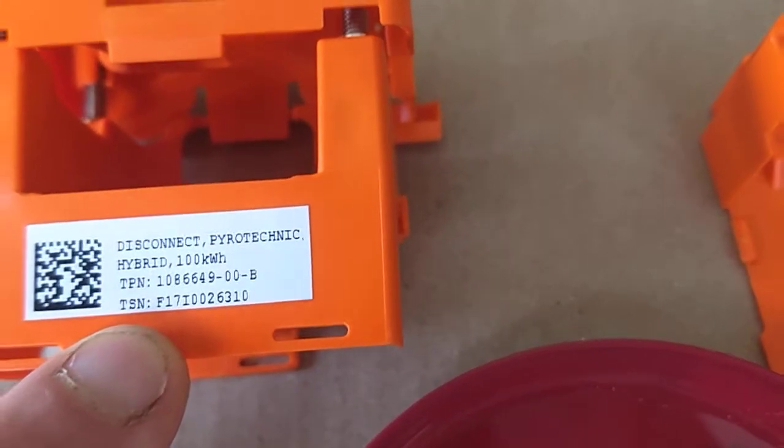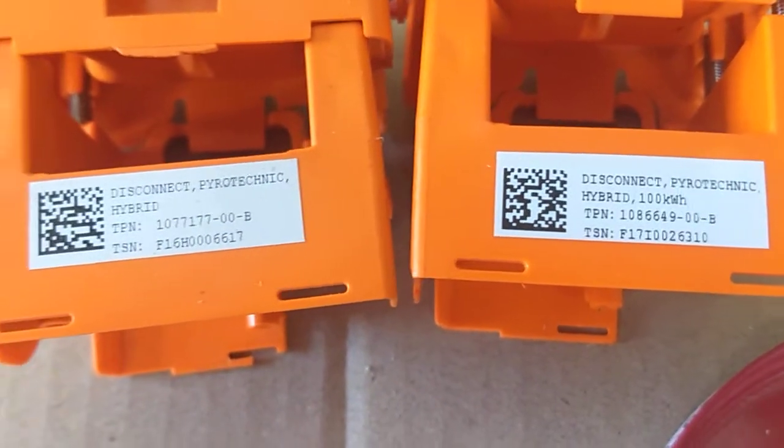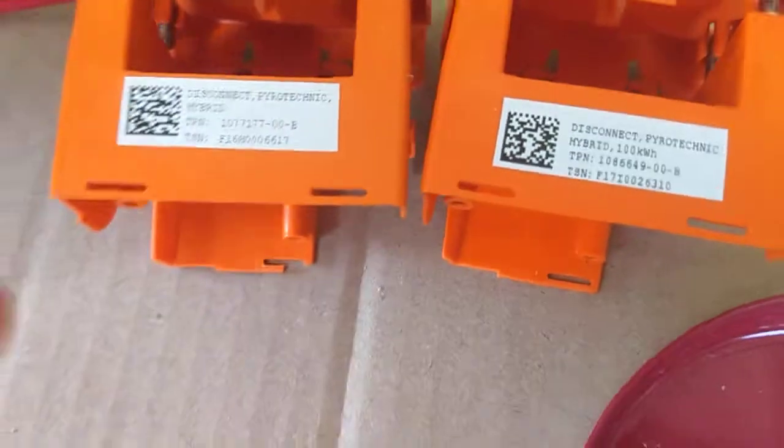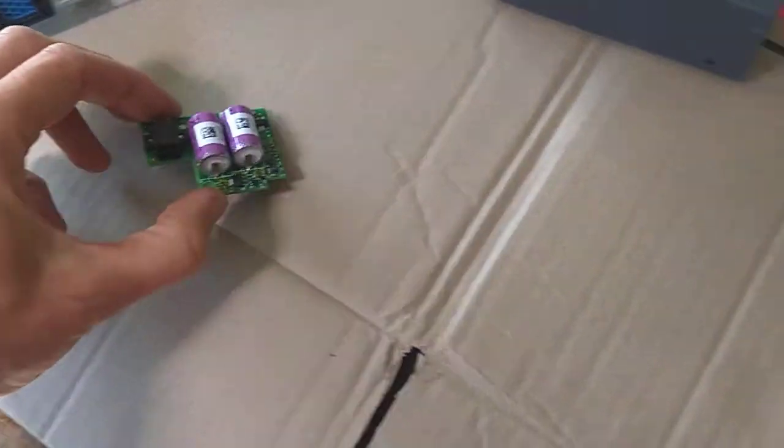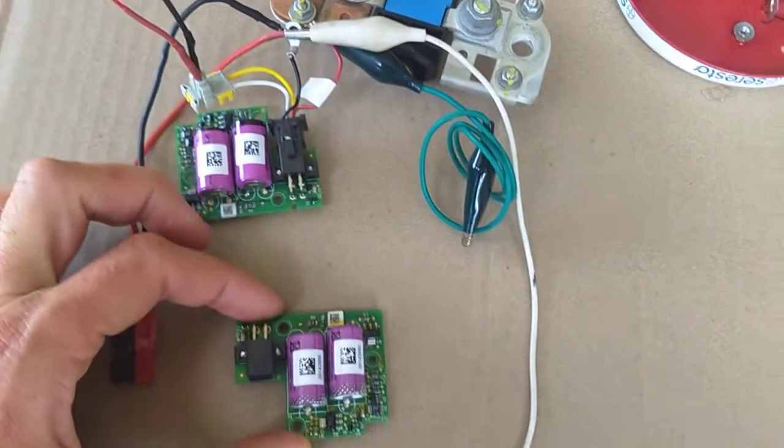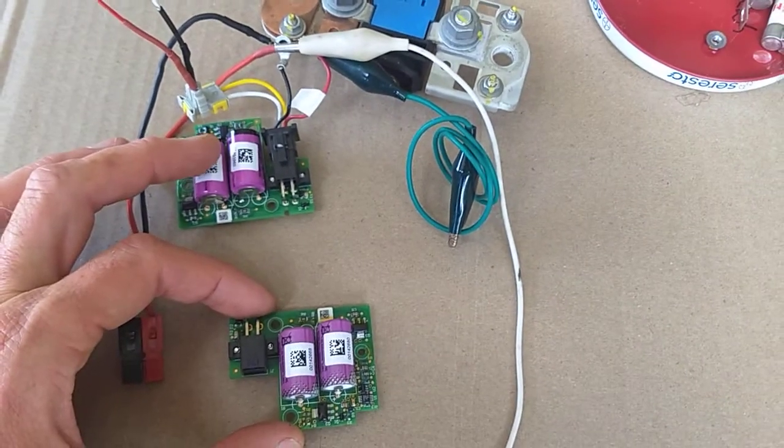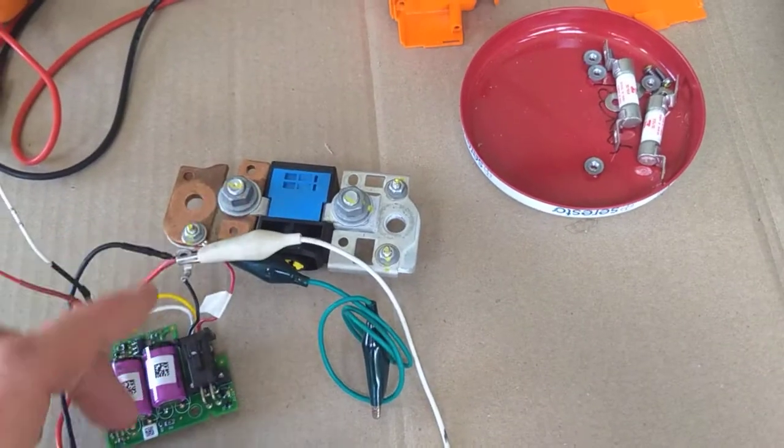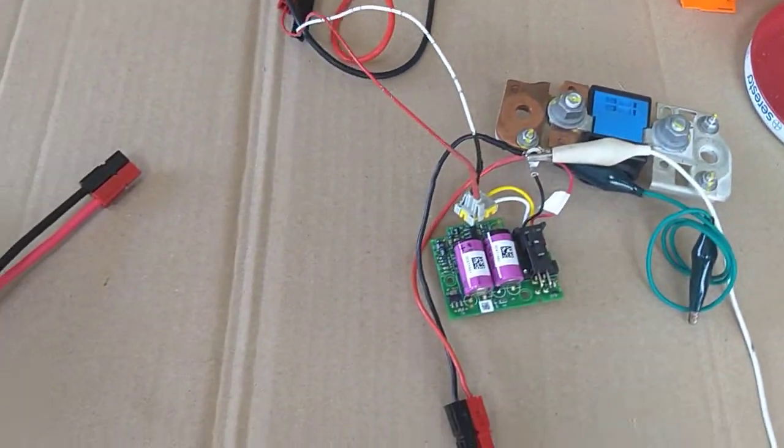Here we are, 107 and a 108. Different part numbers. I believe that the difference will be in the programming on the set points for these. So I reckon if I keep the 100 kilowatt hour electronics but swap the fuse over, then it should be okay.